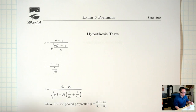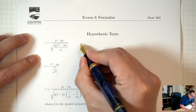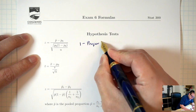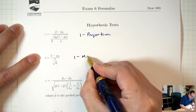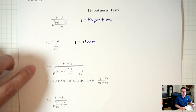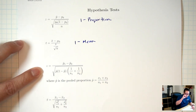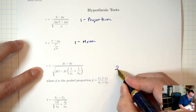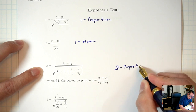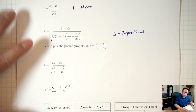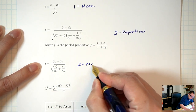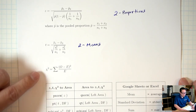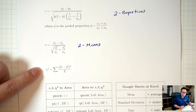We've seen most of these formulas before. The first formula with the z is for the one proportion situation. The second formula with the t is for the one mean situation. The third formula with the z and p1-hat p2-hat is for the two proportions situation. The fourth formula with the t and x1-bar and x2-bar is for the two means situation. The last formula we'll talk about when we get to chapter 12, so we'll skip this for now.